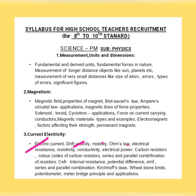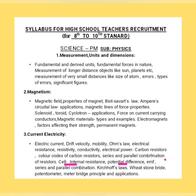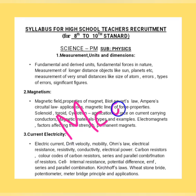Moving to current electricity: electric current, drift velocity, mobility, Ohm's law, electrical resistance, resistivity, conductivity, electric power, carbon resistors and colour codes, series and parallel combination of resistors, internal resistance of a cell, potential difference, EMF, Kirchhoff's laws, Wheatstone bridge, potentiometer, meter bridge, and their applications. The question paper is MCQ type only — very short questions — so you must be aware of both concepts and calculations.